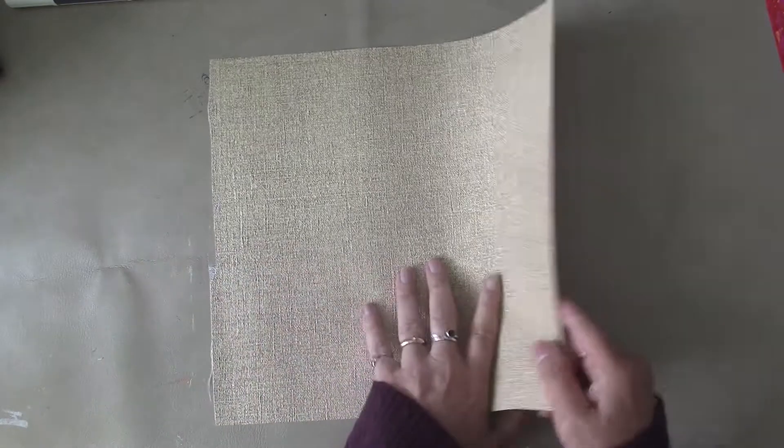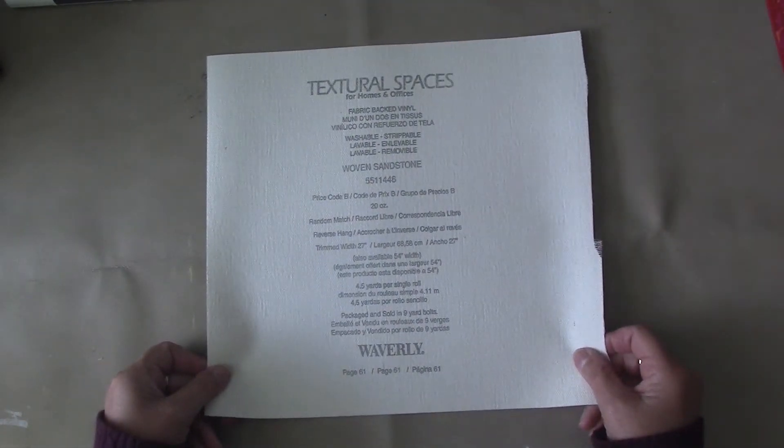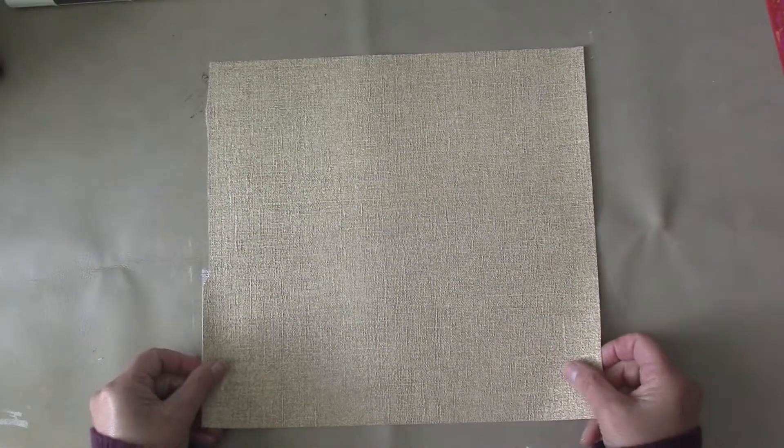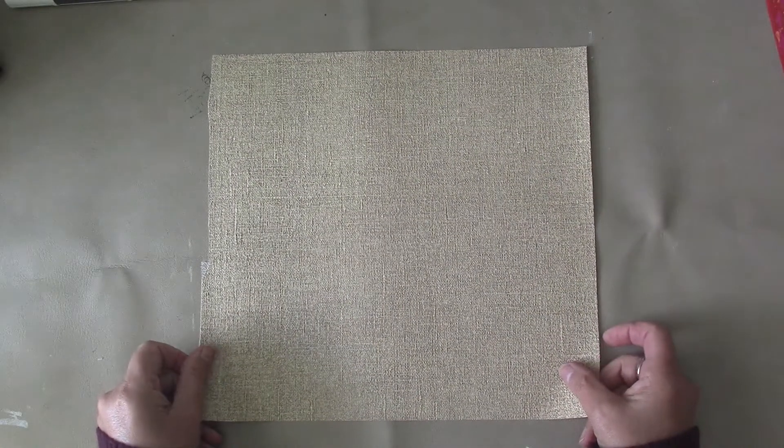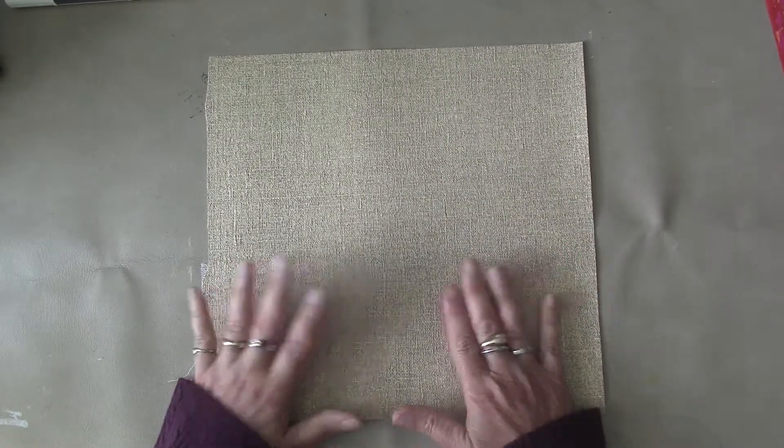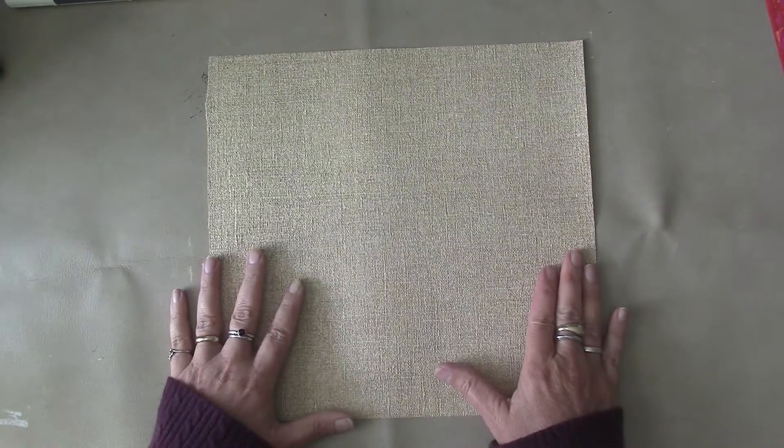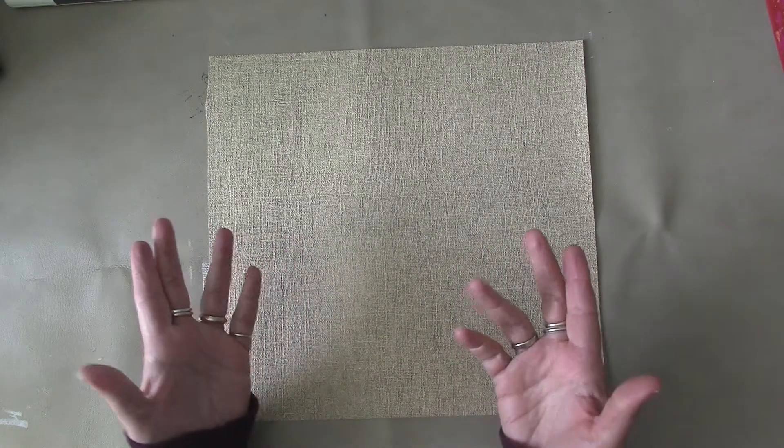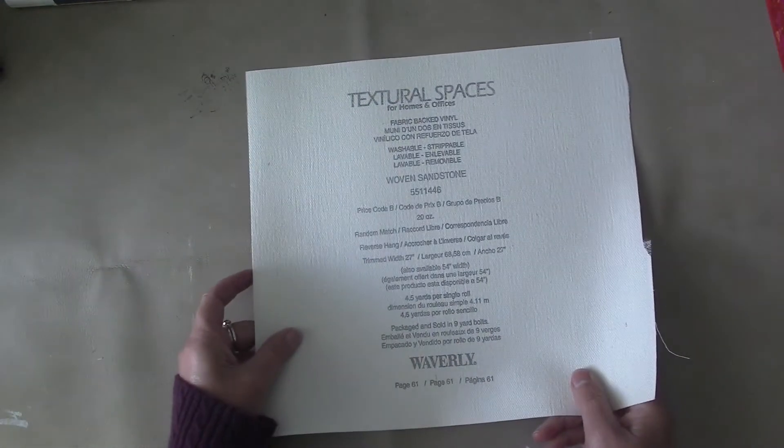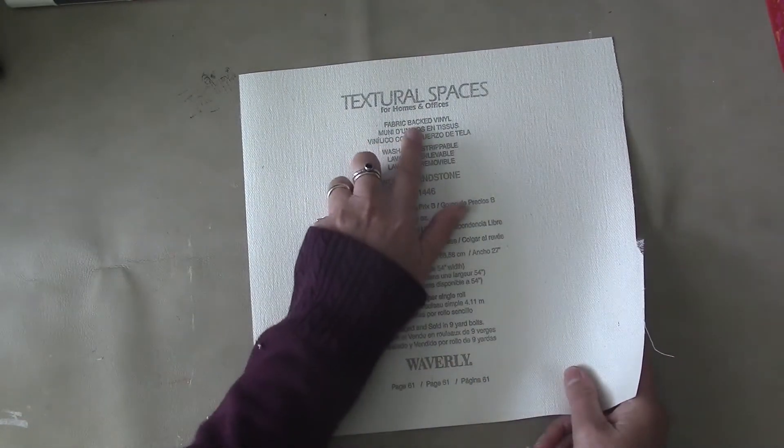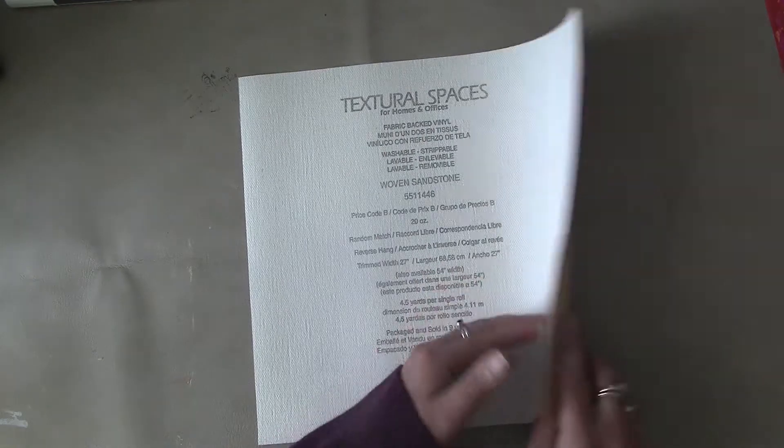I'm starting out with a piece of wallpaper. You can get wallpaper books for free in a lot of cases from places like Sherwin-Williams and other decorating stores. When they stop selling a particular line of paper, they'll give the books away. This happens to be a vinyl-backed fabric paper, so it's nice and thick.